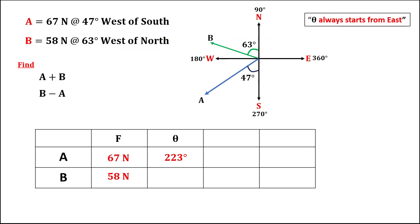Then to find theta for vector B, starting from east, observe that this given angle is inside the rotation, so we need to add these two angles: 90 plus 63 degrees. Therefore, theta for vector B is 153 degrees.